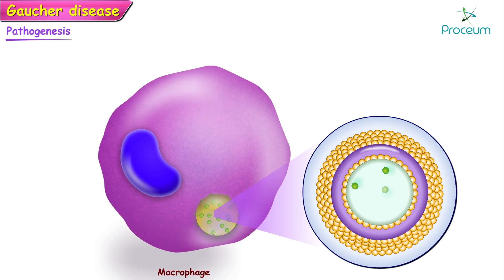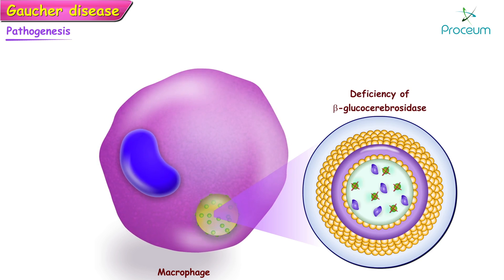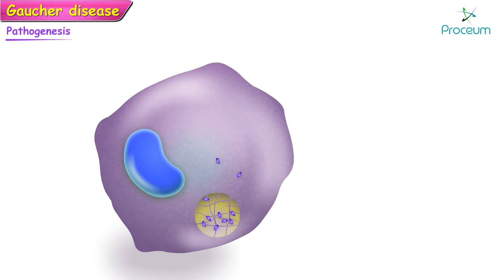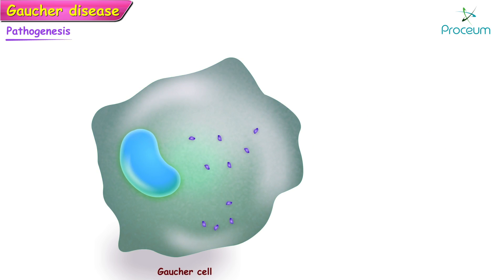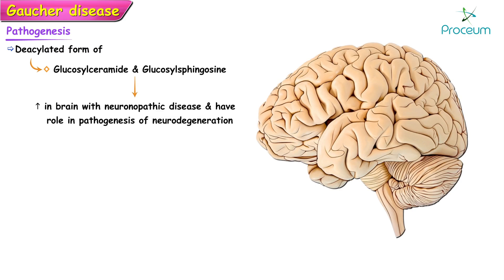In affected patients, the deficiency of glucocerebrosidase leads to accumulation of glucocerebroside and other glycolipids within the lysosomes of macrophages. The deacylated form of glucosylceramide and glucosylsphingosine is particularly elevated in the brain in patients with neuronopathic disease — that is, Type 2 and Type 3 — and may have a role in the pathogenesis of neurodegeneration.